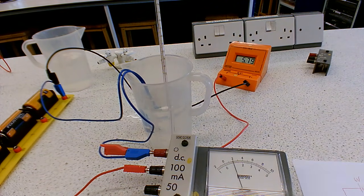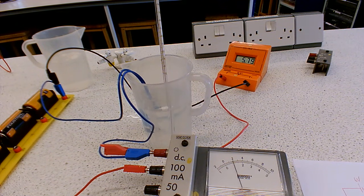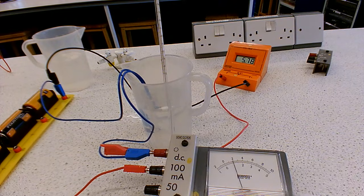and then our potential difference is 5.79. So we've got 5.79 potential difference, 20 milliamps of current, and I said that was 57 degrees in there. So that's what we've got in our table at the moment.